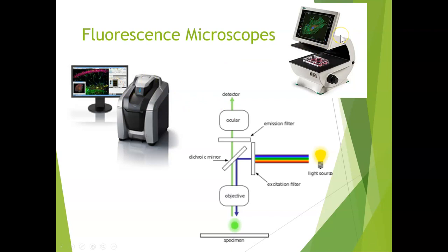In more traditional microscopes, the light goes through the oculars to your eyes, and a traditional camera is set up on top of the ocular tube to capture the images. I hope this quick overview helps you understand the microscopes used in the cell culture laboratory.